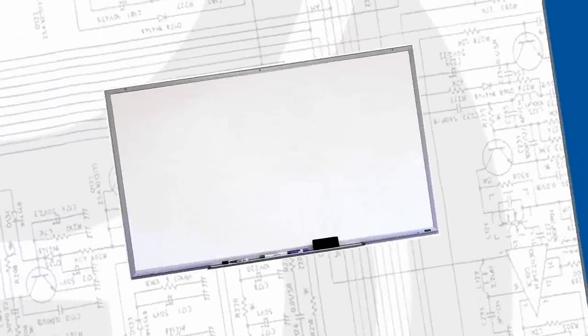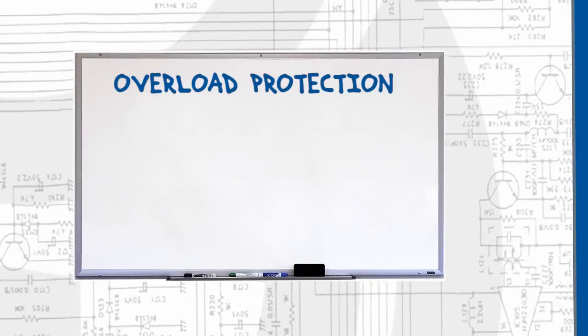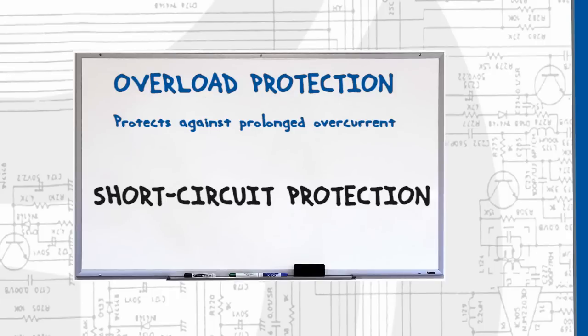So let's sum up. Overload protection breaks a circuit only after a prolonged period of overcurrent. Short circuit protection breaks a circuit the instant an overcurrent is detected.